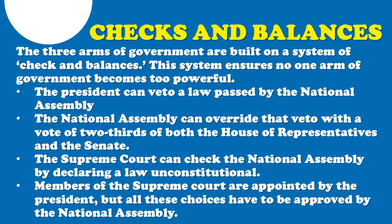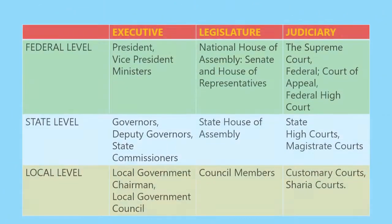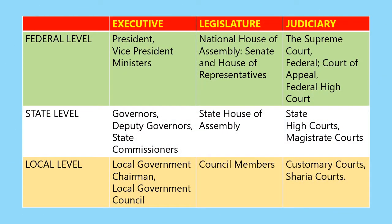At the federal level, under the executive we have the President, Vice President, and ministers. Under the legislature we have the Senate and the House of Representatives. Under the judiciary at the federal level we have the Supreme Court and the Court of Appeal — just as shown in the table. That is how the government is organized.